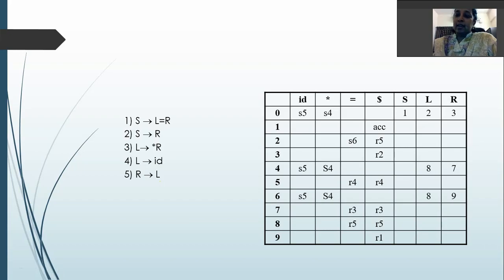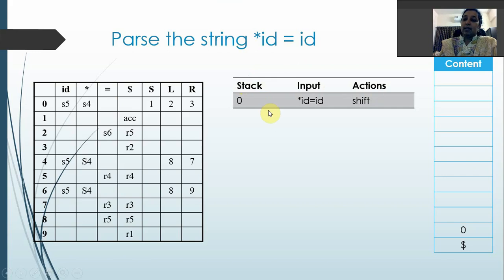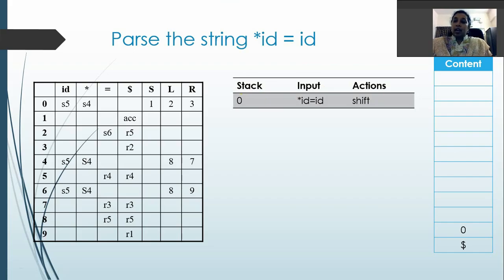We will take an example and see how it works. For the grammar, the parsing table is provided here — it can be based on SLR, CLR, or LALR. To parse the given string we have three main things: the stack, the input, and the actions. We need a stack because, as you may remember from Theory of Computation, a context-free grammar is modeled as a pushdown automaton with a control unit, input, and stack.